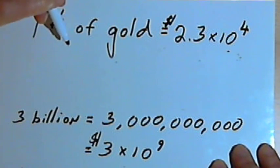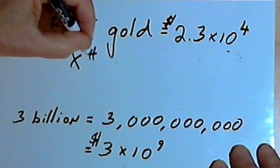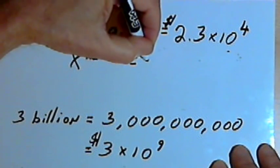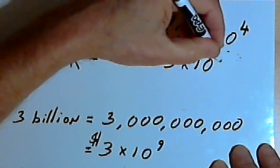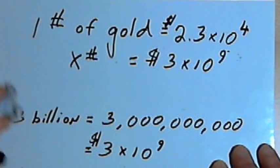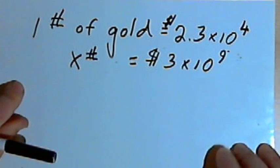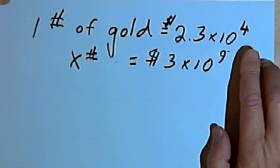I want to convert that into gold. I want to know how many pounds of gold. So it's going to be x pounds. And those x pounds are going to be worth 3 times 10 to the ninth. So what have I got here? It's two equations. In both equations I've got pounds on one side and dollars on the other side.